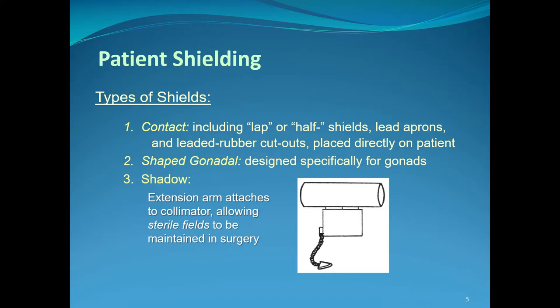We want to shield the patient's gonads from the path of the primary beam — that's the purpose of gonadal shielding. There are several different types of gonadal shielding. Contact shields include lap or half shields, lead aprons, and leaded rubber cutouts placed directly on the patient. These contact shields are actually not designed for use in the primary beam path.